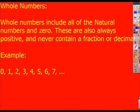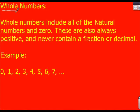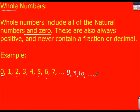Next we have our whole numbers. The only difference between a whole number and a natural number is that whole numbers also include zero. So it's just the same thing as counting, but we start at zero and count up: zero, one, two, three, four, five, six, seven, eight, nine, ten, and so on. Again, always positive — just counting — so we don't have any fractions or decimals.